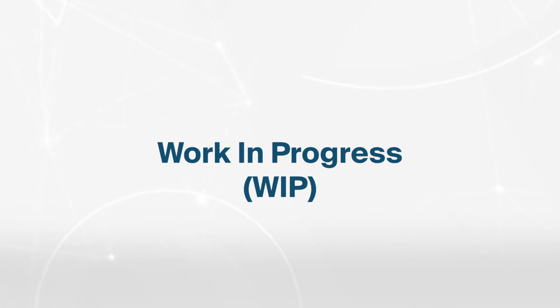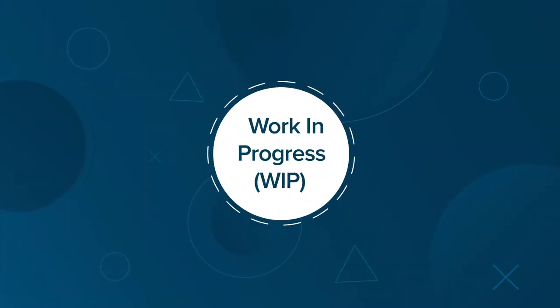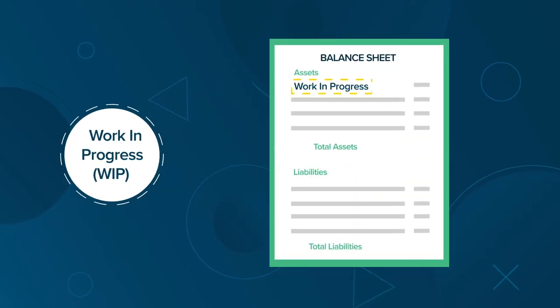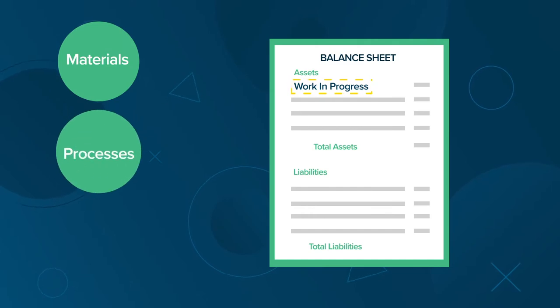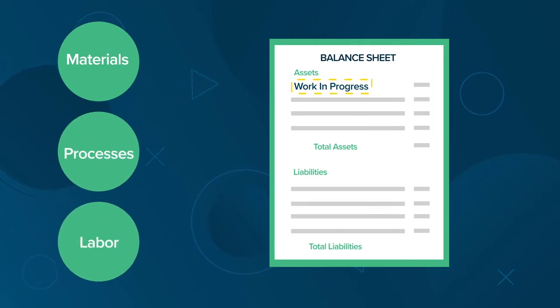Hi, I'm Rainey with Finance Strategists. In this lesson, we're going to cover Work in Progress, or WIP, which is an accounting entry on a company's balance sheet referring to the money spent on materials, processes, and labor to manufacture a product.